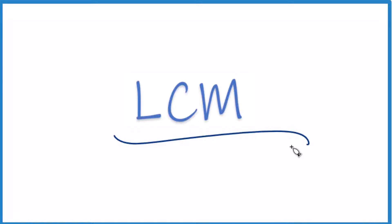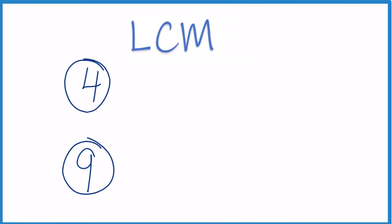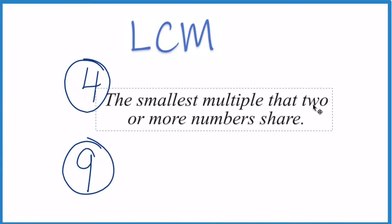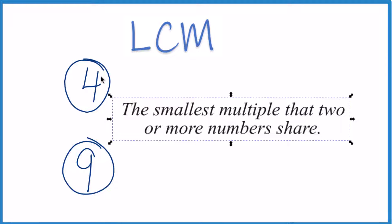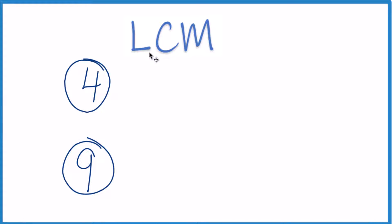Let's find the least common multiple for 4 and 9. The least common multiple is the smallest multiple that these two numbers share — the smallest number that both 4 and 9 go into evenly. So let's write the multiples of 4 and 9, look at the common multiples, and choose the least common multiple.